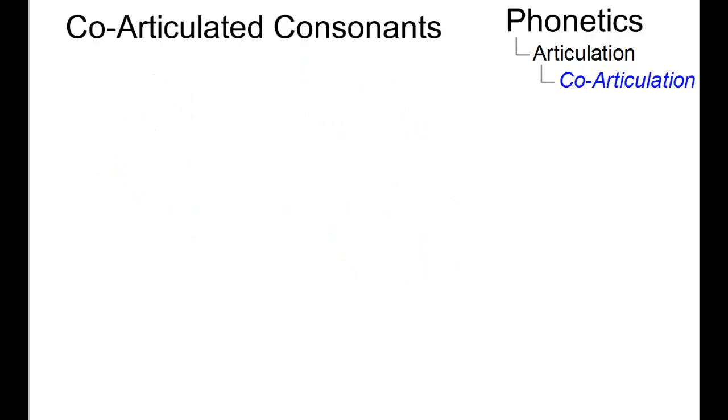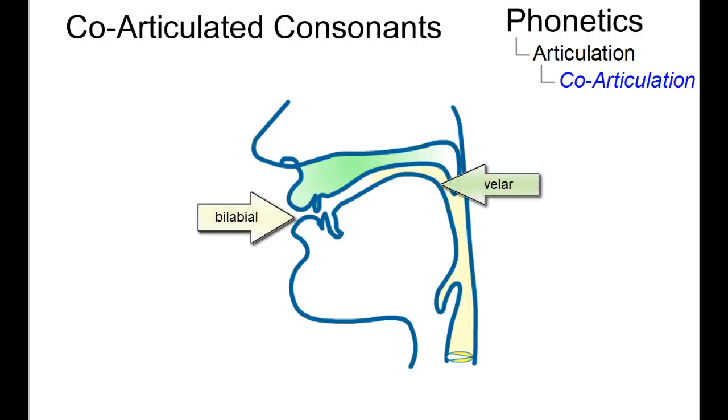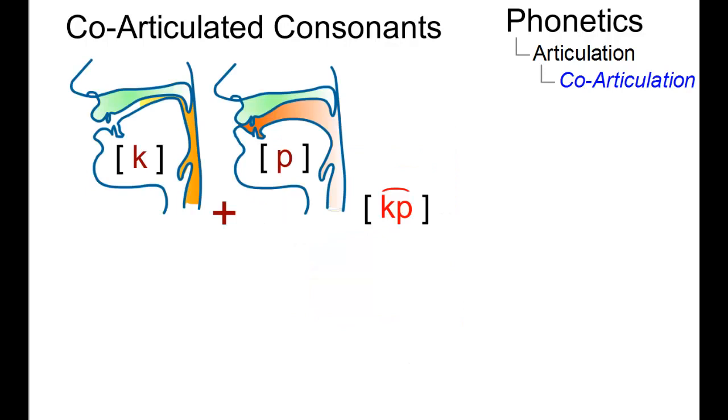The first concerns the production of a co-articulated consonant, that is, a consonant with two simultaneous places of articulation. An example of such a sound is the voiceless labiovelar plosive, found in many West African languages.